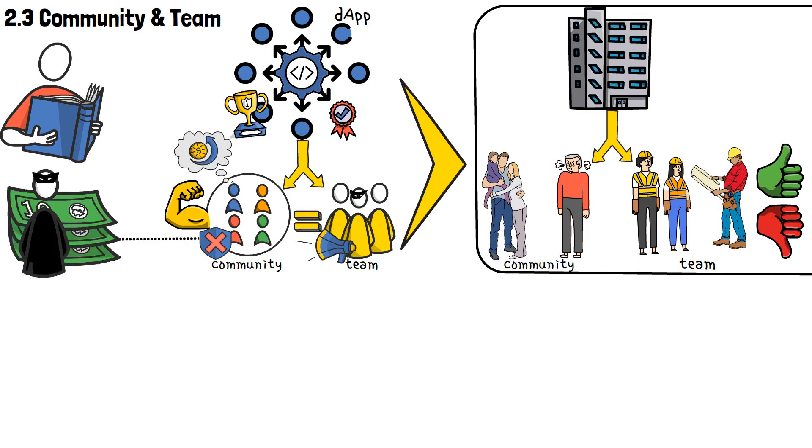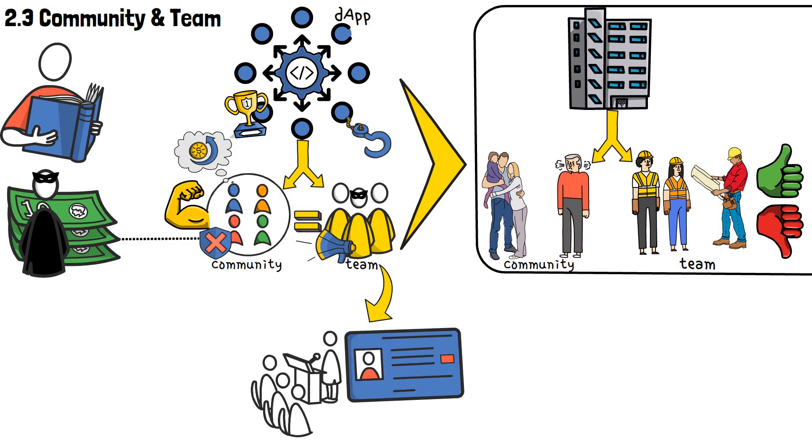If the minds behind a project are unreliable, how can their product be different? The first thing to look for is to see if the team behind the dApp development have publicly disclosed their identities. This demonstrates their commitment and accountability to the project. Social media is another factor.